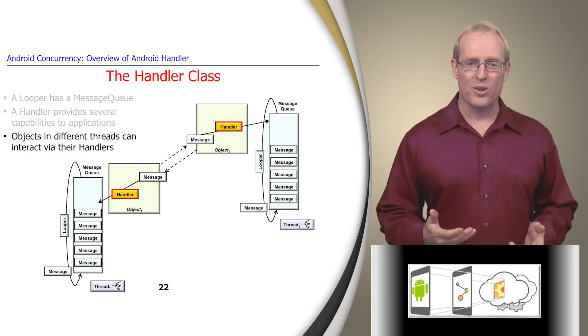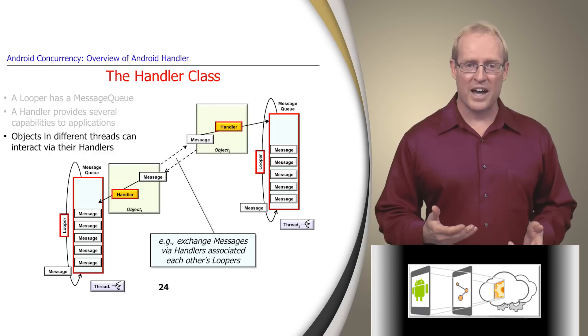Objects running in different threads can interact via their handlers. For example, they can exchange messages via handler and message queues associated with each other's loopers.